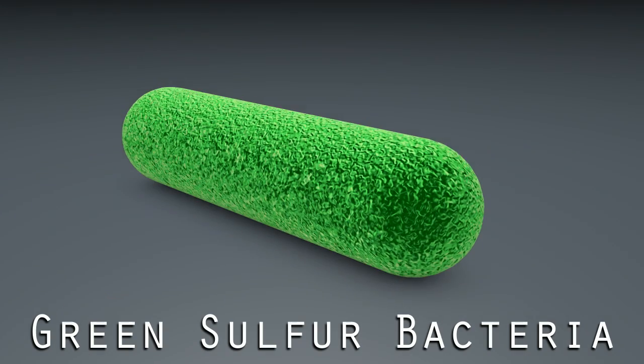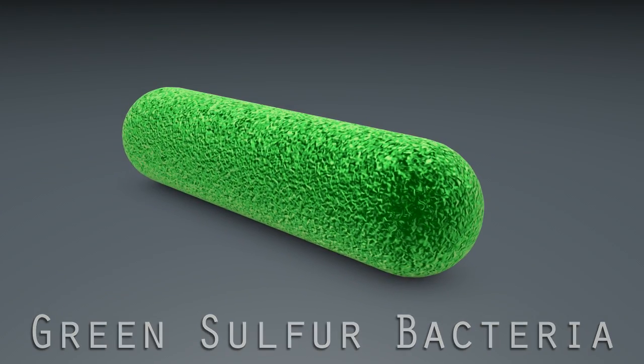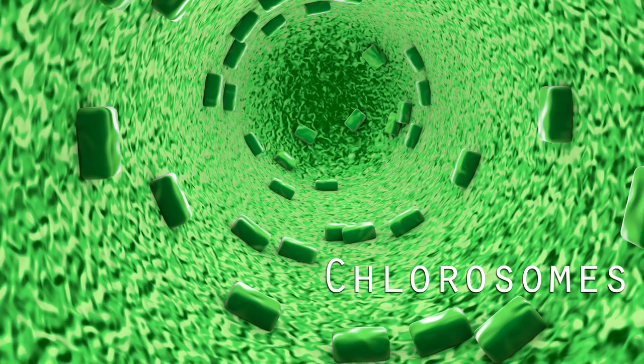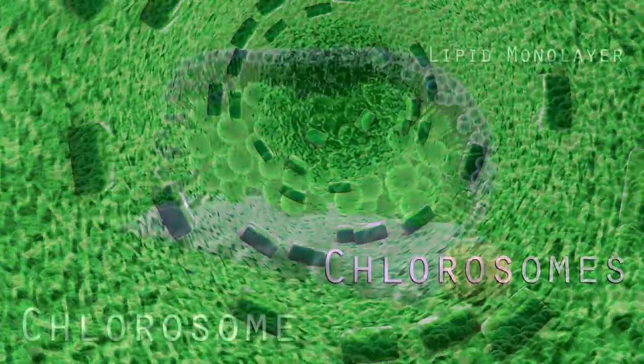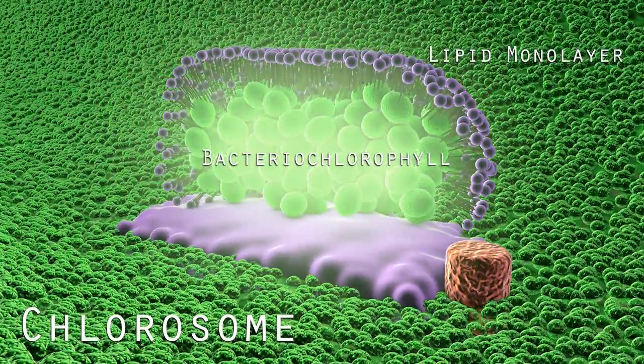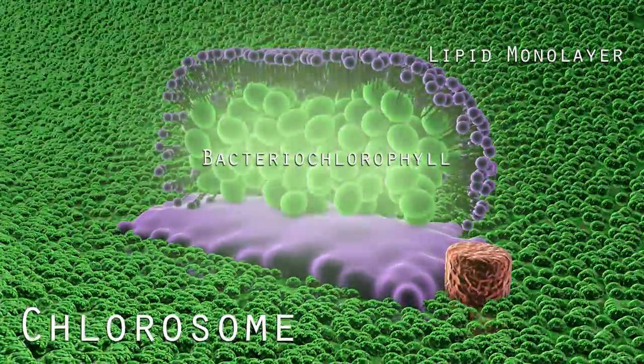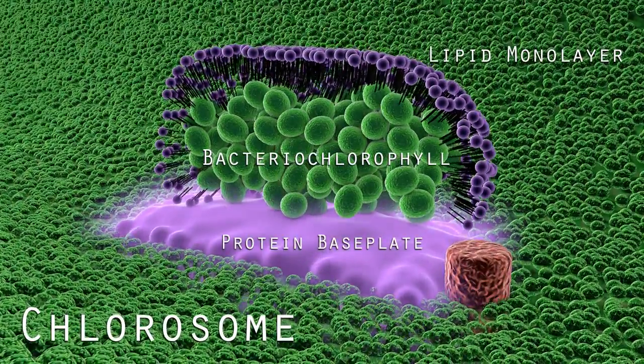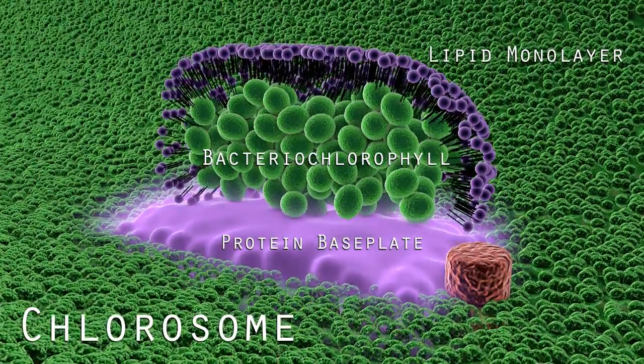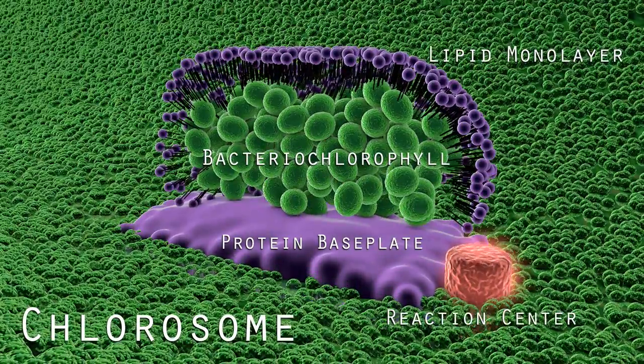In the cytoplasm, along green sulfur bacteria's plasma membrane are sacs encased in a lipid monolayer called chlorosomes. Chlorosomes contain bacterial chlorophyll that absorb light, transferring the energy to a protein base plate. The base plate in turn transfers energy to the reaction center where electron transfer takes place.